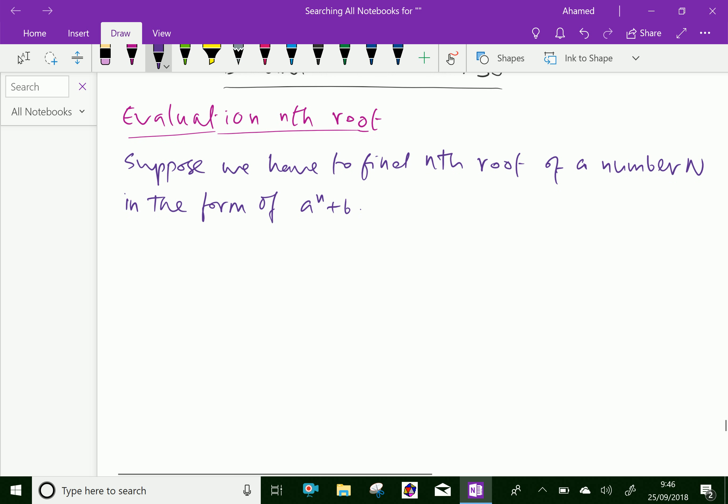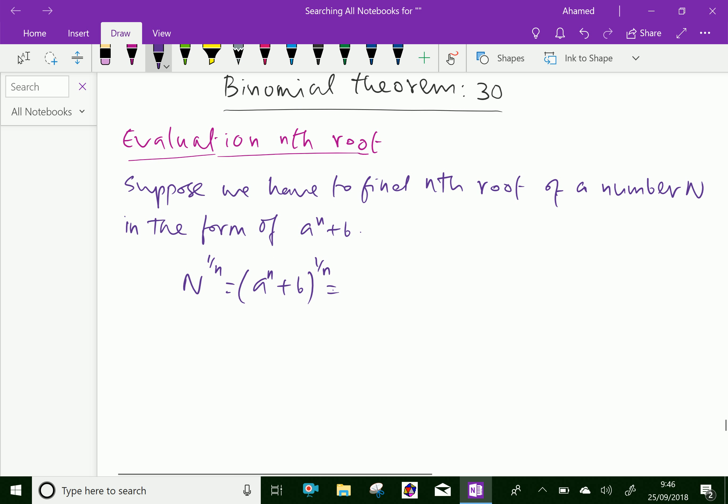Now, we can say nth root of any number, that is N^(1/n), equals (a^n + b)^(1/n). Here we have N = a^n + b, which is further equal, we can take out a^n as a times (1 + b/a^n)^(1/n).